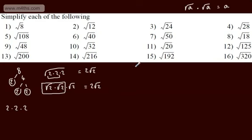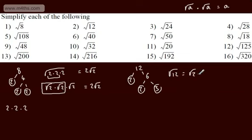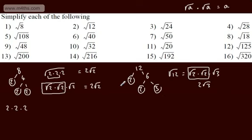If we look at 12, we could divide that by 2, giving us 6, then divide by 2, giving us 3. So root 12 will be equal to root 2 multiplied by root 2 multiplied by root 3. We can see root 2 times root 2 gives us 2, so we end up with 2 lots of root 3. This is my preferred approach, though bringing pairs out is another option.